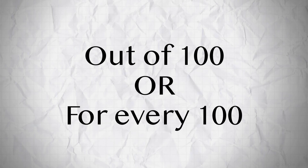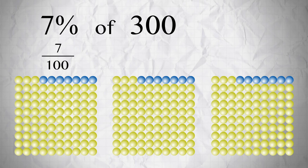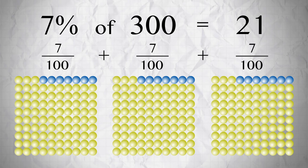Percent means out of 100, or for every 100. Suppose there are 300 marbles and 7% of them are blue. That means 7 out of every 100 marbles are blue. You can think of 7% of 300 like this: 7 out of 100, plus 7 out of 100, plus 7 out of 100. That makes 21 out of 300. So 7% of 300 is 21.